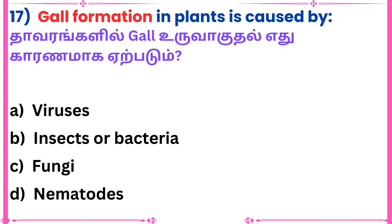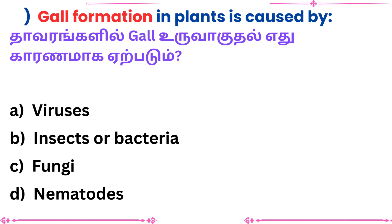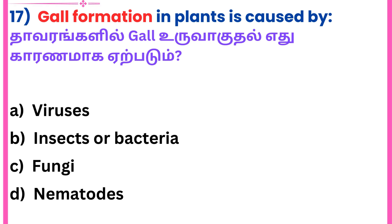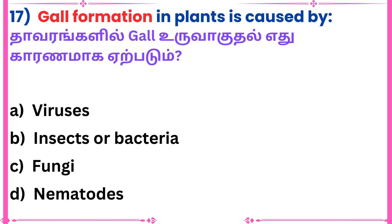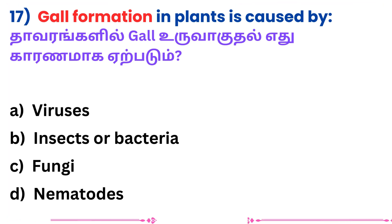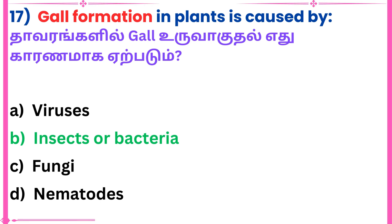Question 17: Gall formation in plants is caused by — Answer: Insects or bacteria.